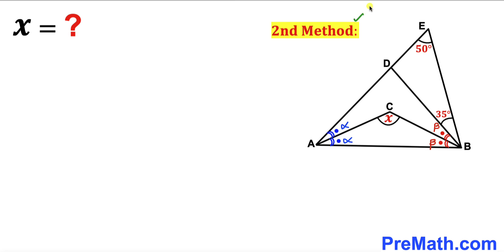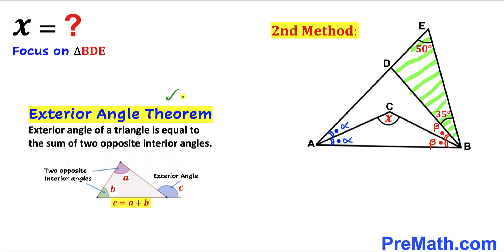Now let me show you the second method. Let's focus on triangle BDE and recall the exterior angle theorem. According to this theorem, the exterior angle of a triangle equals the sum of the two opposite interior angles — angle C equals A plus B. In our case, the exterior angle equals 50 plus 35, giving us 85 degrees.